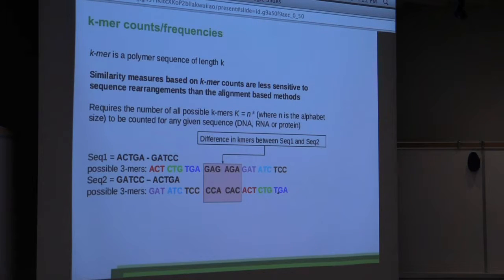So a small digression. Some of these measures we are using in our model are based on k-mers. So a k-mer is a polymer of sequence of certain length k. And similarity measures based on k-mers, k-mer counts or frequencies, are less sensitive to sequence arrangement than the alignment-based methods. I'm giving an example of two sequences, and I have switched them. Here we can see that if we count all the k-mers, there is only a difference of two k-mers between these two sequences. The idea here is that these types of measures would be more robust to this type of sequence arrangement than the BLAST measure itself.